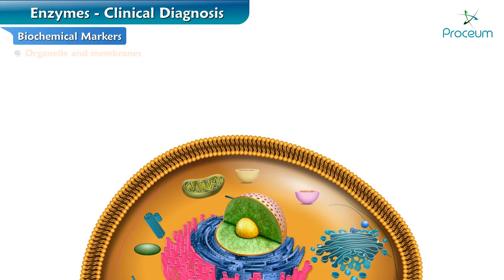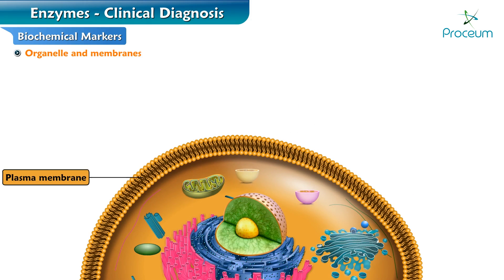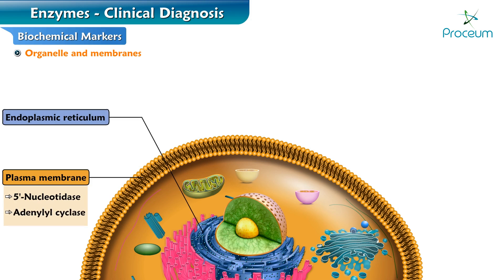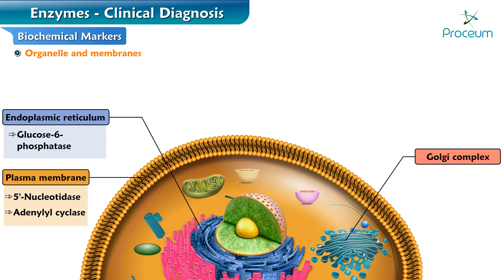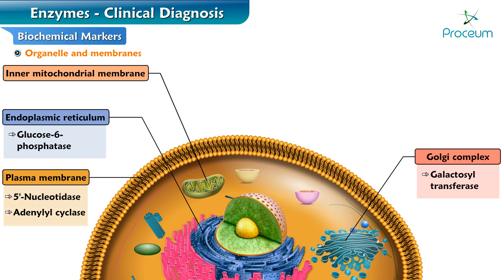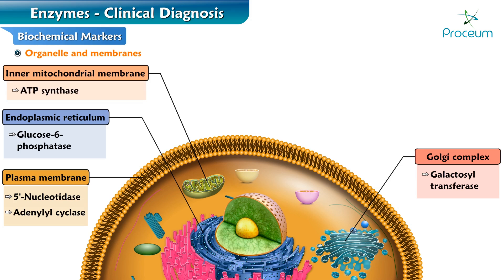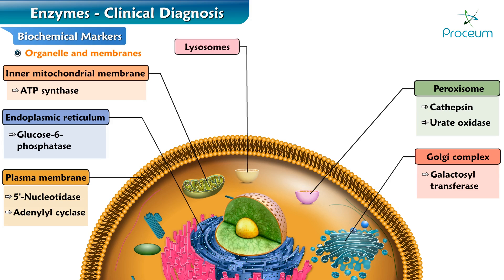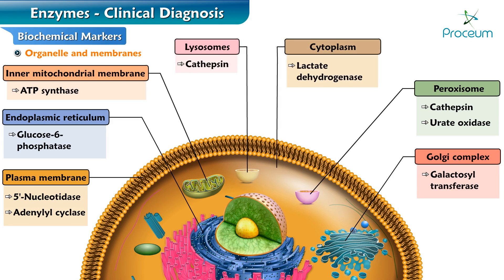Here are some enzymes as markers of organelles and membranes. For the plasma membrane, markers include 5'-nucleotidase and adenylyl cyclase. For the endoplasmic reticulum, the marker enzyme is glucose-6-phosphatase. For the Golgi complex, the marker enzyme is galactosyltransferase. For the inner mitochondrial membrane, the marker is ATP synthase. For peroxisomes, the marker enzymes are catalase and urate oxidase. For lysosomes, the marker enzyme is cathepsin. For the cytoplasm, the marker enzyme is lactate dehydrogenase.